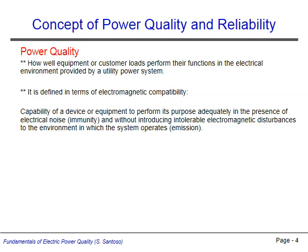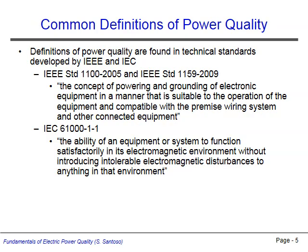Power quality can also be described by how well customer loads function as designed within the electrical environment provided by the power system. This relationship is a two-way street, meaning that not only is the utility provider expected to minimize electromagnetic disturbances that could cause malfunctions in the customer's loads, but the customer loads are also expected to not introduce unacceptable levels of disturbances into the power system. IEEE, in standards 1100-2005 and 1159-2009, defines power quality as the concept of powering and grounding of electronic equipment in a manner that is suitable to the operation of the equipment and compatible with the premise wiring system and other connected equipment.